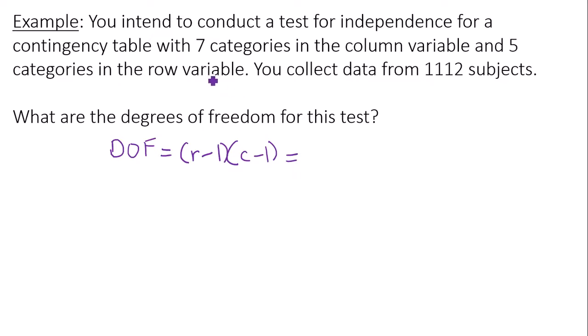Since there are seven column variables, that means the number of columns is seven. Since there are five row variables, the number of rows or r is equal to five.